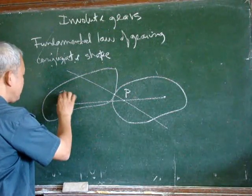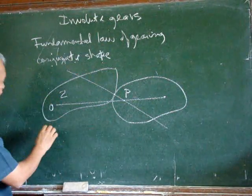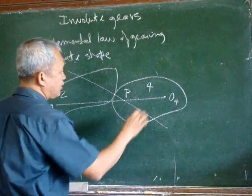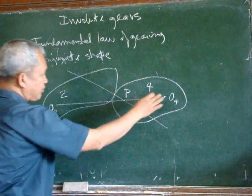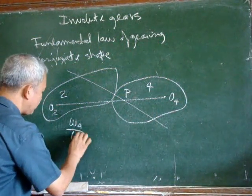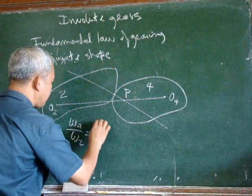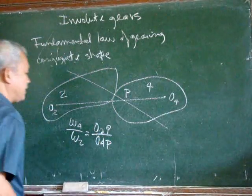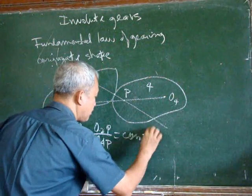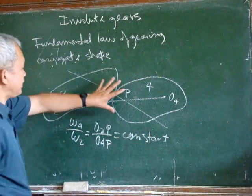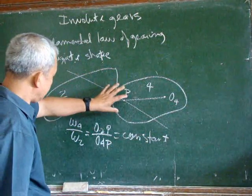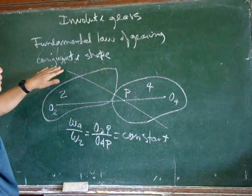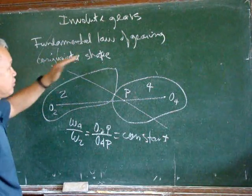If this is body 2 and that is the axis of rotation of body 2, and this is body 4 with that as the axis of rotation of body 4, omega 4 over omega 2 must always be equal to O2P over O4P and it must be constant. So the shape of this outline of the bodies must be conjugated and it satisfies the fundamental law of gearing.